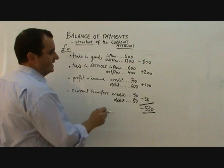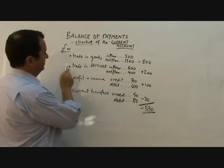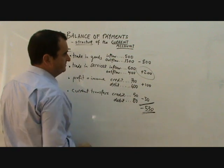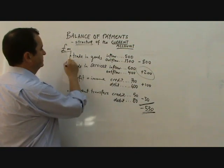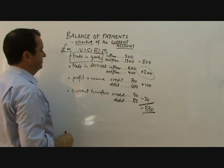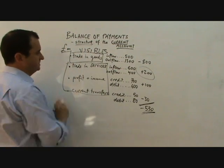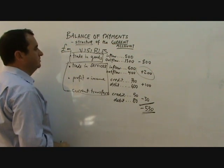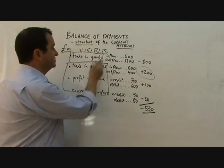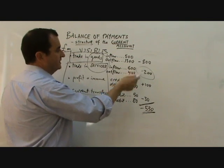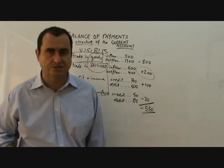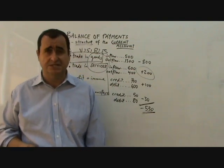It's possible that elements of the current account are in surplus while the overall current account is in deficit. Sometimes we talk about trading goods as visibles, and sometimes we talk about services as invisibles. Sometimes we discuss the position of goods and services only and whether that's in deficit or in surplus. But broadly, this is the structure of the balance of payments current account.